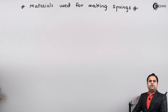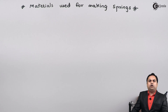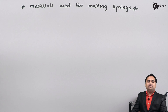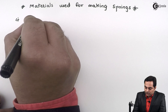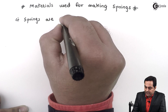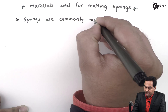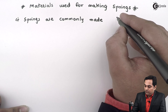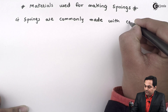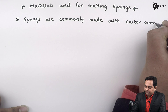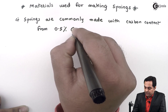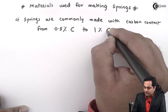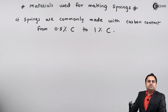The materials which are used for making springs — mostly springs consist of steel, and by steel we mean that it is a mixture of iron and carbon. Springs are commonly made with carbon content from 0.5% carbon to 1% carbon. This is the most common composition used in springs.